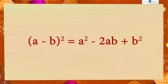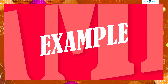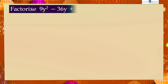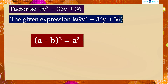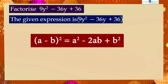Let's see an example. Factorize 9y squared minus 36y plus 36. The given expression has only three terms and the middle term has a negative sign, so we will try to apply the identity (a minus b) whole square equals a squared minus 2ab plus b squared.